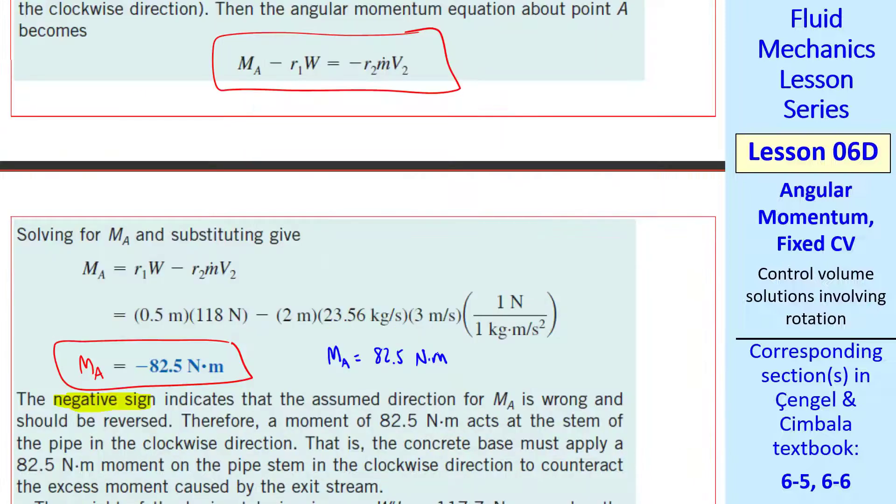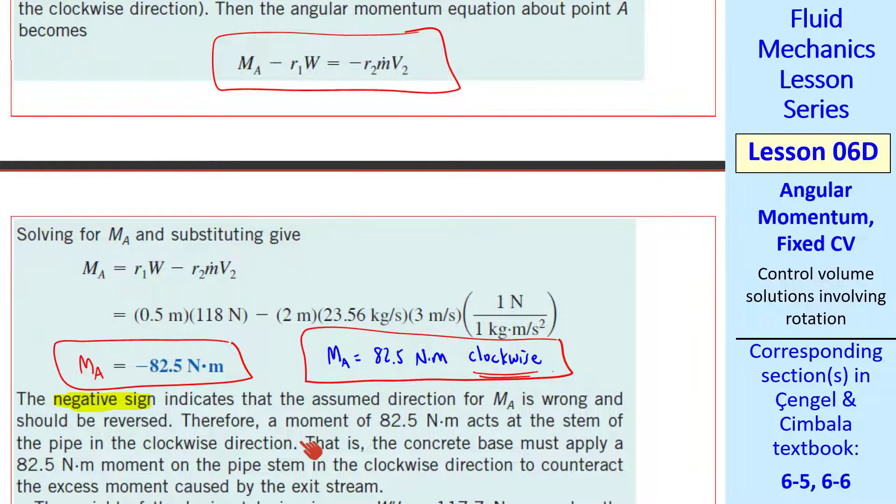Because the signs can get confusing, I recommend writing the answer as MA equals 82.5 Nm clockwise. This moment is acting on the pipe. In other words, the concrete base must apply a clockwise moment on the pipe to counteract the excess moment caused by the exit stream.